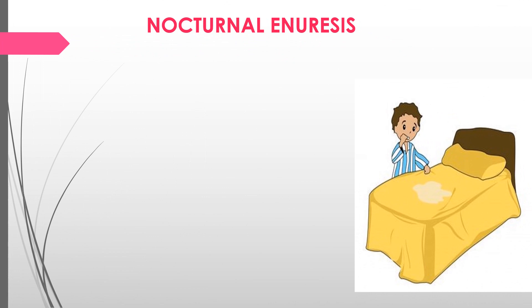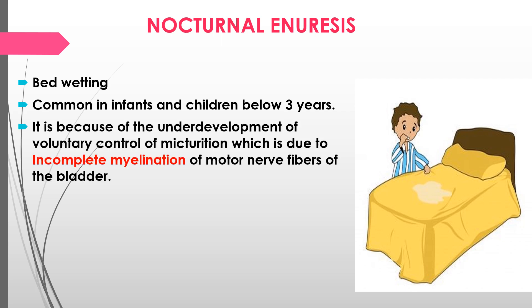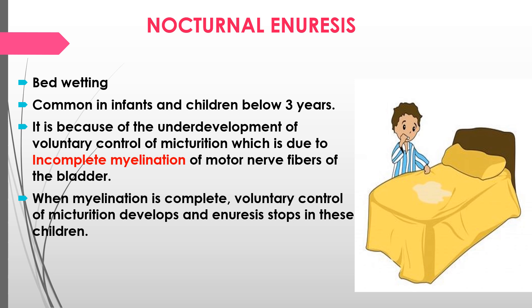Nocturnal enuresis, also called bed-wetting, occurs in infants and children below 3 years of age. It is due to poor development of voluntary control of micturition, specifically because of incomplete myelination of the motor nerve fibers of the bladder. Myelination may continue in some children up to 5 to 7 years of age. When myelination is complete, voluntary control of micturition is established and enuresis stops. If it persists beyond that age, medical consultation is advised.